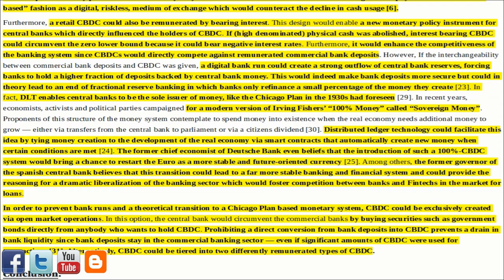This design would enable a new monetary policy instrument for central banks which directly influences the holders of CBDC. If high-denomination physical cash was abolished, interest-bearing CBDC could circumvent the zero lower bound because it could bear negative interest rates. Furthermore, it would enhance the competitiveness of the banking system since CBDCs would directly compete against remunerated commercial bank deposits. However, if the interchangeability between commercial bank deposits and CBDC was given, a digital bank run could create a strong outflow of central bank reserves, forcing banks to hold a higher fraction of deposits backed by central bank money. This would make bank deposits more secure but could in theory lead to an end of fractional reserve banking, where banks only refinance a small percentage of the money they create. DLT enables central banks to be the sole issuer of money, like the Chicago Plan in the 1930s had foreseen.